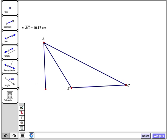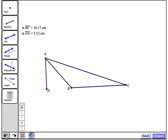And I'm also going to measure the altitude. So I'll tap the length tool again and tap DA. So now I have these two measurements and I'd like to calculate the area of the triangle.